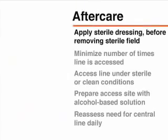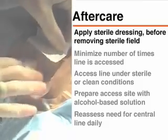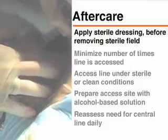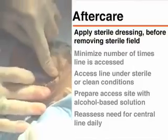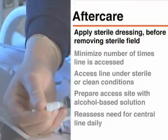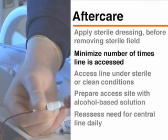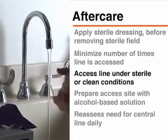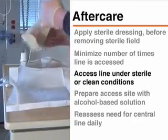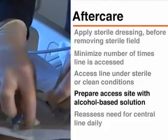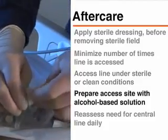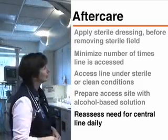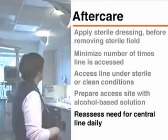A sterile dressing should be placed on the insertion site. The dressing should be changed daily and whenever blood or liquid accumulates or it loses its seal. In order to minimize the potential for infection in the central venous line, the following precautions should be observed: the number of times the line is accessed should be kept to a minimum; each time the line is accessed, this should be done under either sterile or clean conditions; the access site should be prepared with an alcohol-based solution; and there should be a daily assessment to determine whether the central line is still needed, so that it can be removed as soon as it is no longer necessary.